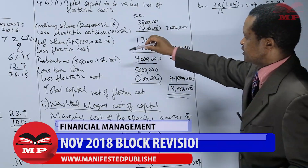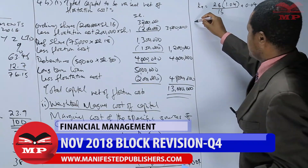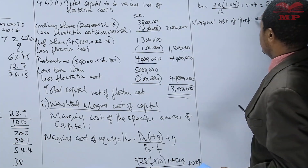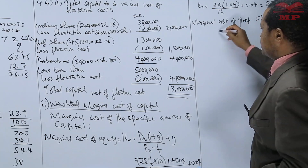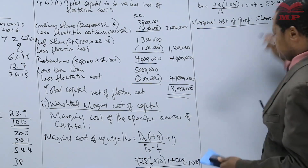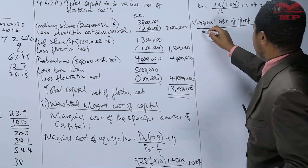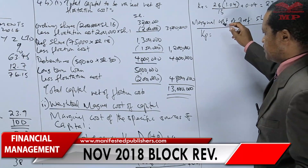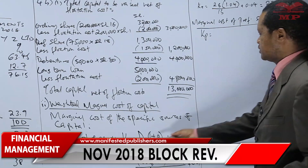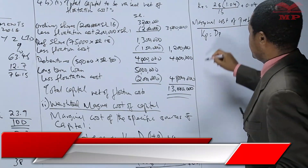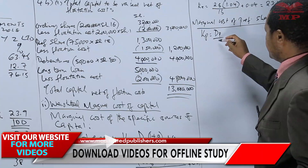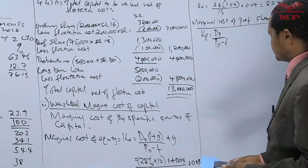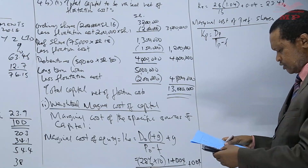The next source of funding is preference shares. We calculate the marginal cost of preferred stock. Kp will be equal to Dp over P minus flotation cost. So we go to the question — what is the dividend?